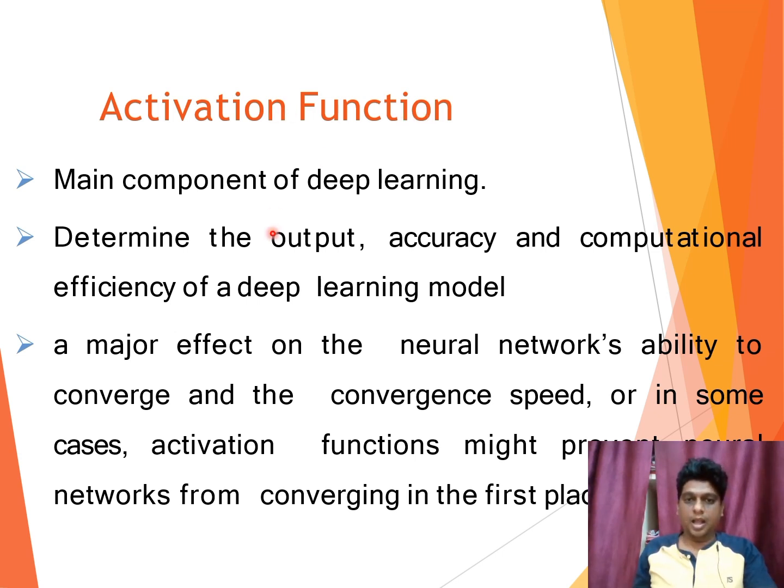It helps to determine the output accuracy and the complexity involves in a model and its efficiency can also be calculated with the help of the activation function. It also plays a major role in the convergence speed. So, it helps to prevent the neural network to convergence happen at the initial stage itself.